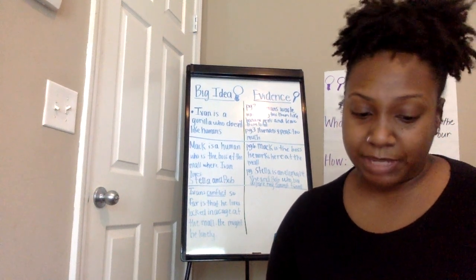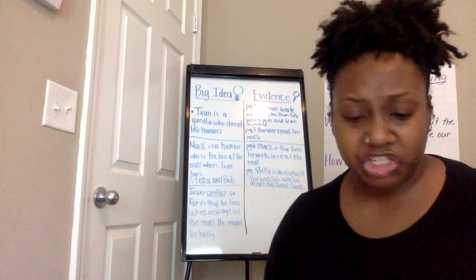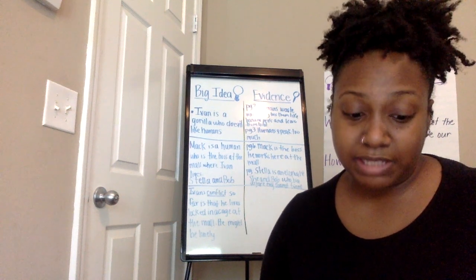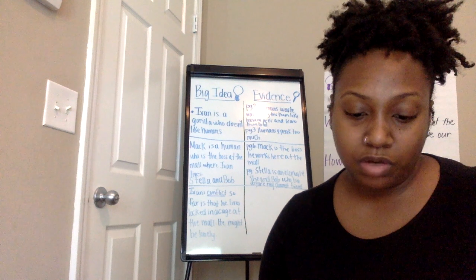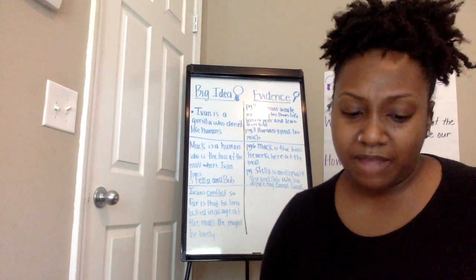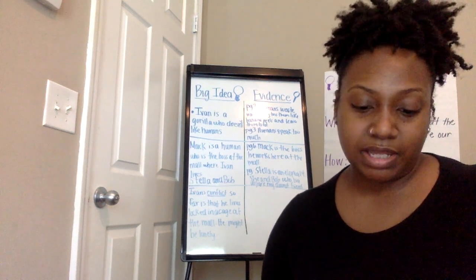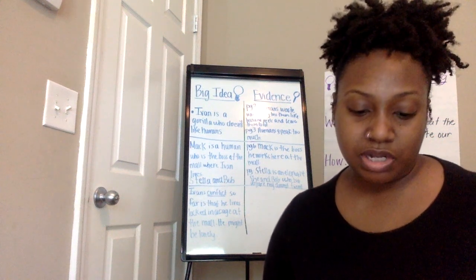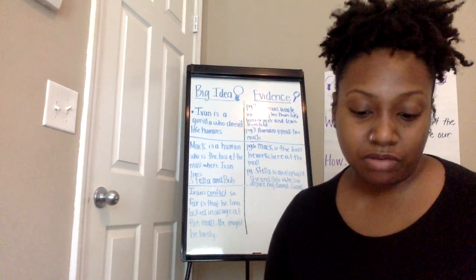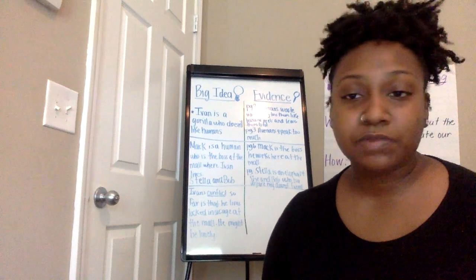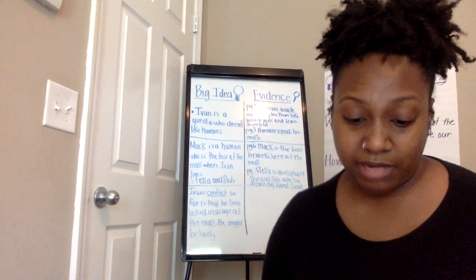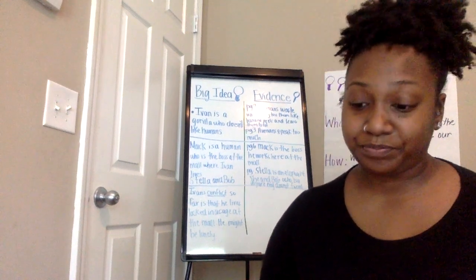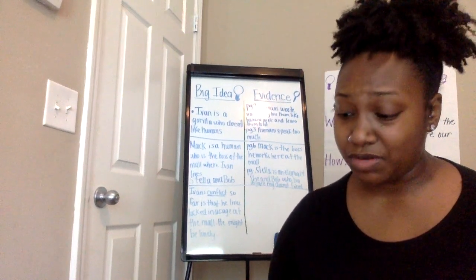I'm going to read one last page. 'Anger is precious. A silverback uses anger to maintain order and warn his troop of danger. When my father beat his chest, it was to say: Beware, listen, I am in charge. I am angry to protect you because this is what I was born to do. Here is my domain. There is no one to protect.' I can't wait to read the rest of this story — it sounds so interesting so far.